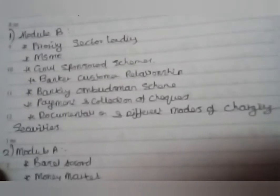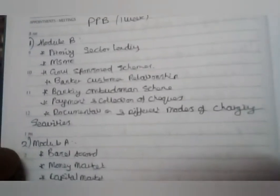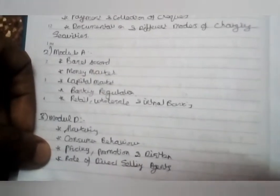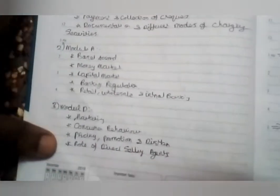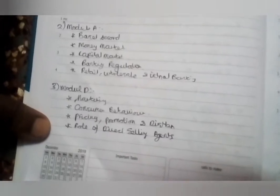In PPP, we have the priority sector, banking ombudsman, payment and collection check. In Module A, basic account, money marketing. This is the first chapter. In Module D, there is marketing, consumer behavior, promotional distribution.